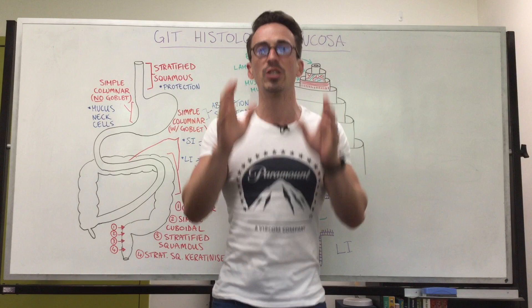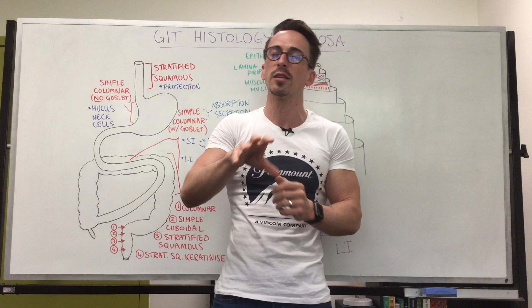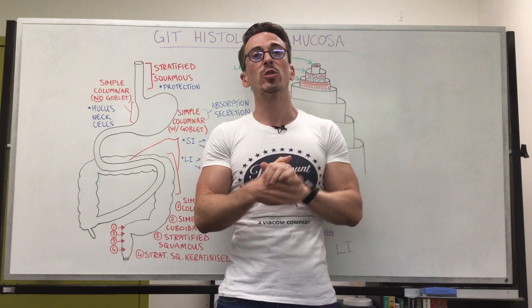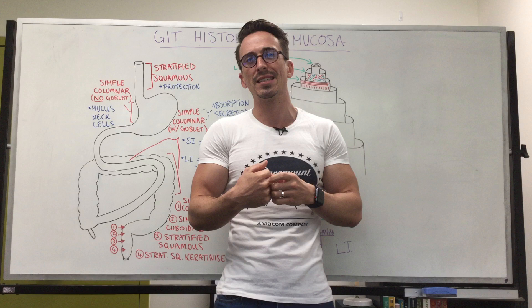Hi everyone, Dr. Mike here. In this video we're looking at the histology of the GIT, which is the gastrointestinal tract. Histology is the study of cells and tissues — if I were to take a biopsy of your skin, slice it up into very thin segments and look at it under the microscope, that is histology. Remember, with the gut or gastrointestinal tract, it's one big long tube that starts at the mouth and moves all the way down to the anus.